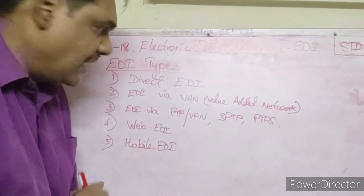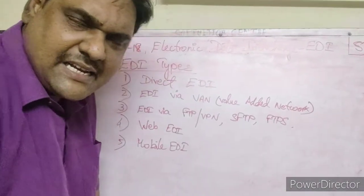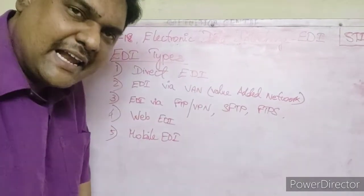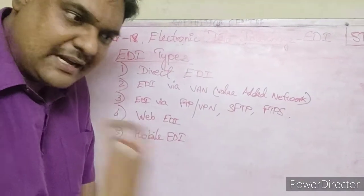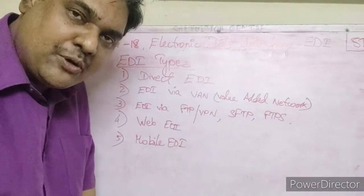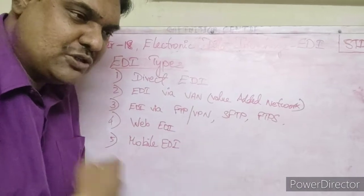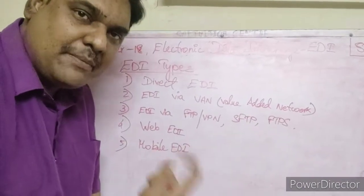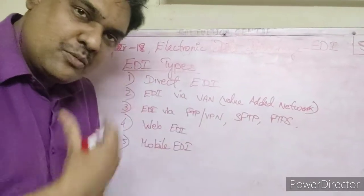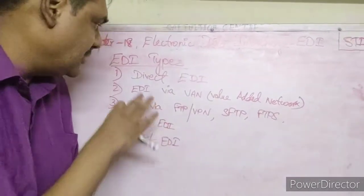First, Direct EDI. In Direct EDI, without any other intermediary, the business partners establish a direct connection. The seller's computer and the receiver's computer are connected directly via wire, mobile, or satellite. Through that direct connection, documents are sent and received.